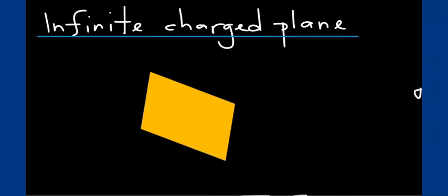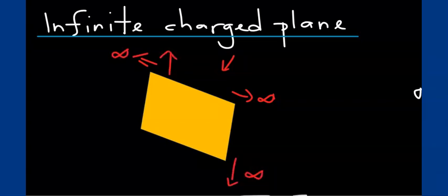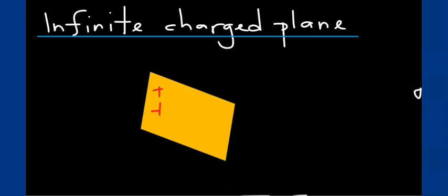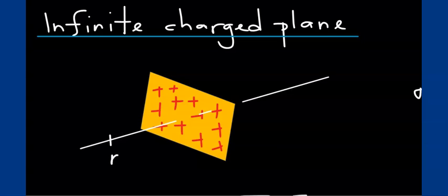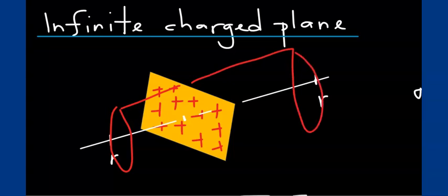Next, let's look at an infinite charge plane system. This is an infinite charge plane that extends to infinity in all directions. Positive charges are distributed on both surfaces of this infinite charge plane. Running an axis through the center, we want to determine the electric field at some point on one side. We need to construct the Gaussian surface, and we can use a cylinder as the Gaussian surface.